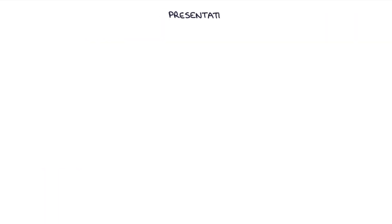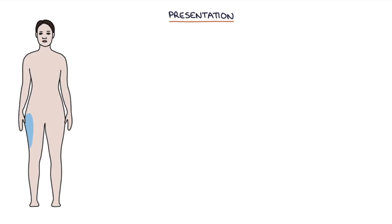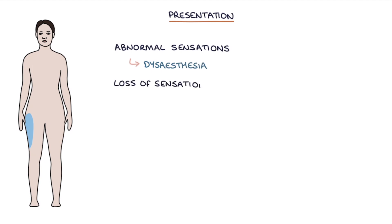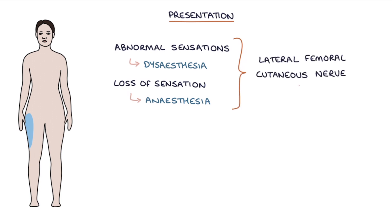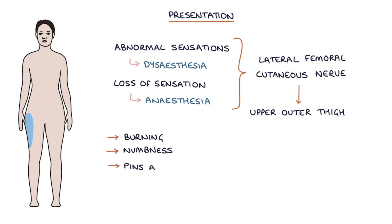Let's talk about the presentation. Patients present with abnormal sensations, called dysaesthesia, and a loss of sensation, called anaesthesia, in the distribution of the lateral femoral cutaneous nerve, affecting the skin of the upper outer thigh. Patients may describe symptoms of burning, numbness, pins and needles, or a cold sensation.